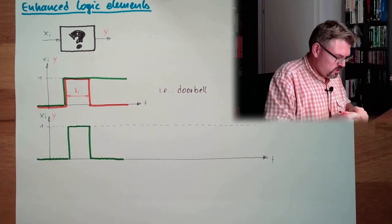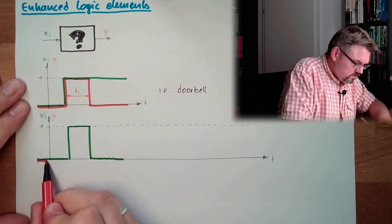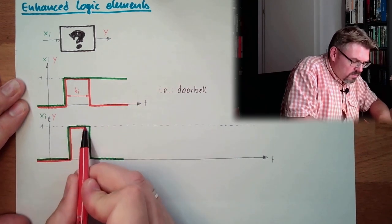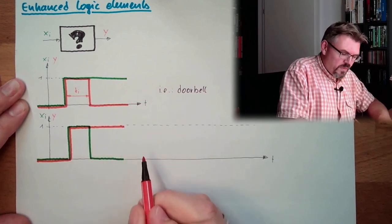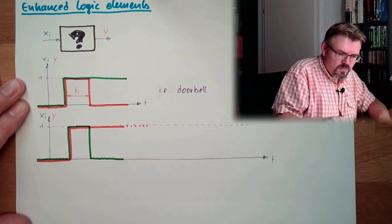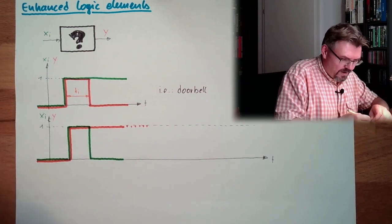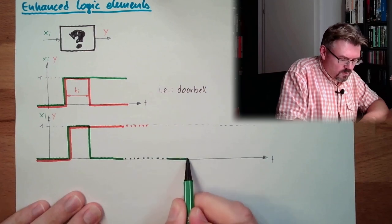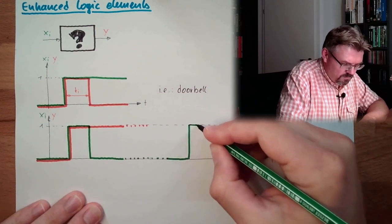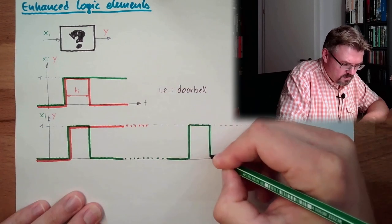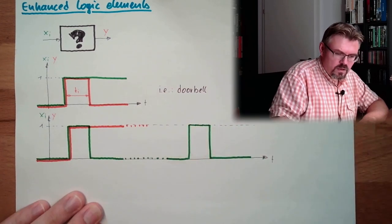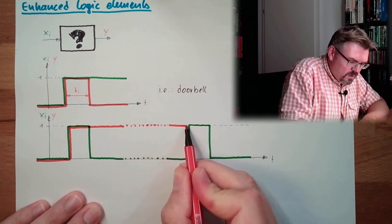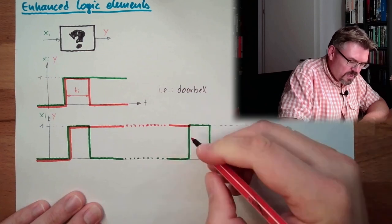It might change. And here, it might stay on. And after a certain amount of time, undefined amount of time, we do have a second impulse on the input. And the output will stay. And here, with the second impulse, it might get down.